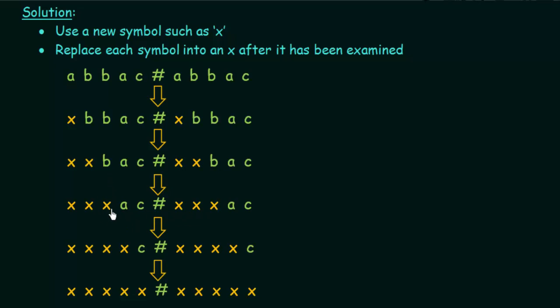This process continues for all the symbols. The second b is also replaced with x, along with its counterpart. The a is replaced with x, and since there is also an a in the second half, it is replaced with x too. Then the last symbol c is replaced with x, and since there is another c in the second half, it is also replaced with x. At the end, if everything has been replaced with x, we can conclude that the first half of the string equals the second half.